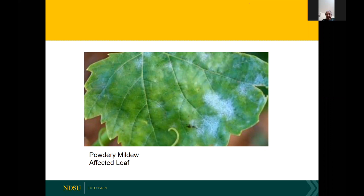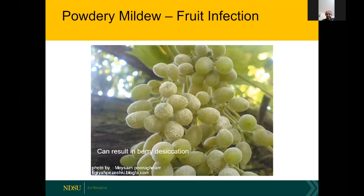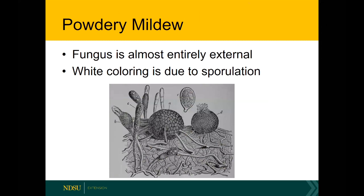Later, those infection spots will result in growth on the upper surface of the leaf. It can infect the berries as well. Powdery mildew is obviously doing a much better job of keeping that tissue alive compared to black rot, but you're not going to want to eat that fruit. After a few days those berries are going to start to shrivel as the fungus pulls nutrients and water out of them to keep itself alive.